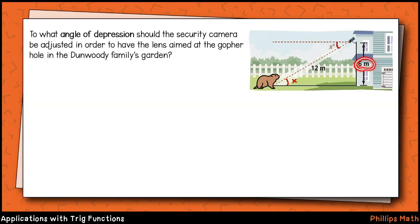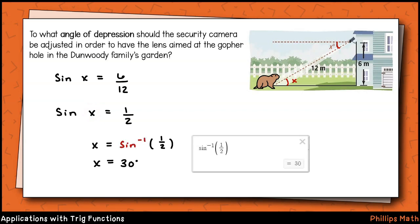Now we can use trigonometry to solve here. We have the side opposite the acute angle, and we have the hypotenuse. So we'll use sine. To set it up, we have sine of x degrees equals 6 over 12, which simplifies to 1 half. Since we're solving for the angle here, we'll need to use the inverse sine function. That will be x equals the inverse sine of 1 half. That's a 30 degree angle. Since angle x is congruent to the angle of depression, the camera should be tilted downward at 30 degrees to spot the gopher.